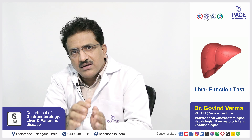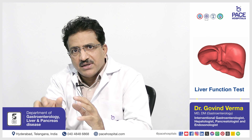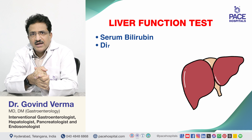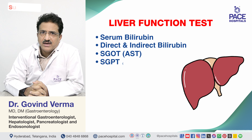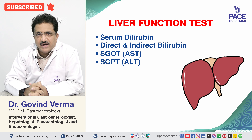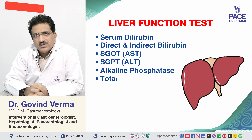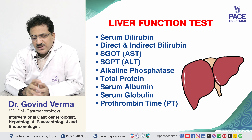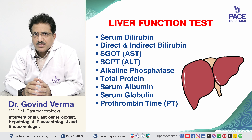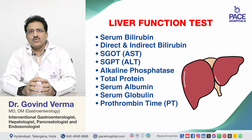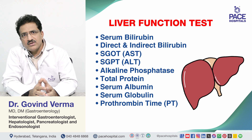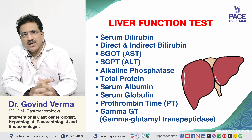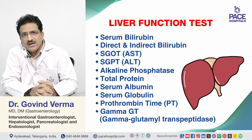The parameters covered under the liver function test include serum bilirubin — total, direct, and indirect bilirubin — SGOT (also called AST), SGPT (also called ALT), alkaline phosphatase, total protein, serum albumin, serum globulin, and prothrombin time. Additional tests done in some panels include gamma-GT (gamma glutamyl transpeptidase) and INR with prothrombin time.